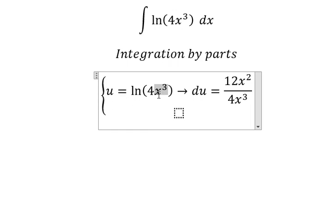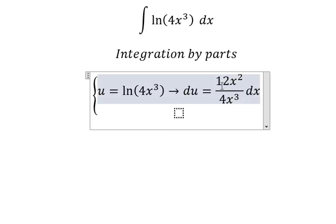First derivative of x to the power of 3, you got 3x². Number 3 and number 4 you got 12. 12 divided by 4 you got number 3. x² divided by this one you got 1 over x.